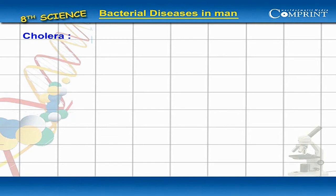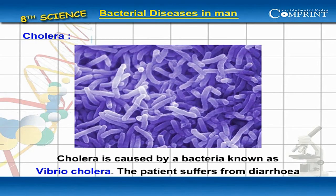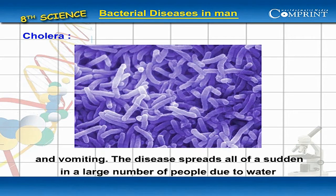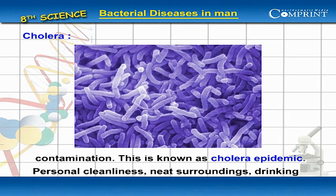Cholera is caused by a bacteria known as Vibrio cholera. The patient suffers from diarrhea and vomiting. The disease spreads all of a sudden in large number of people due to water contamination. This is known as cholera epidemic.